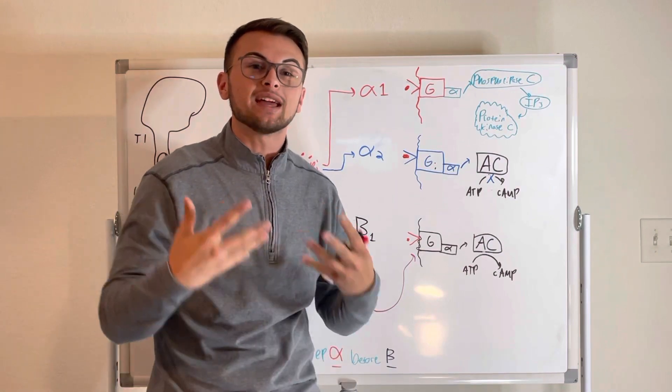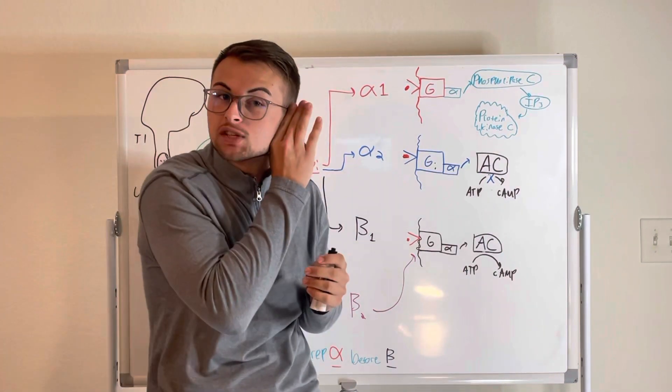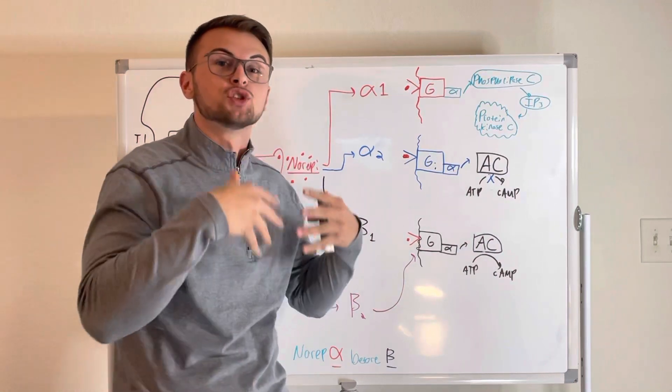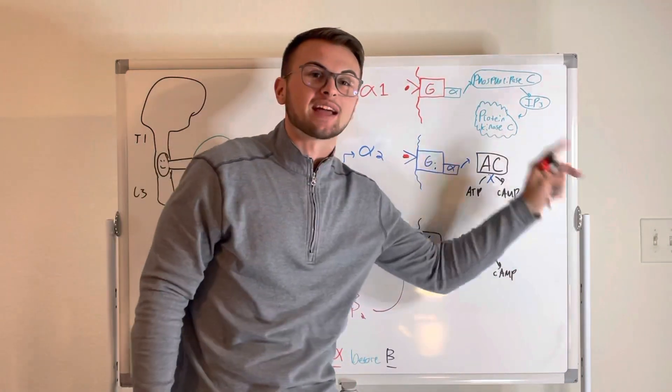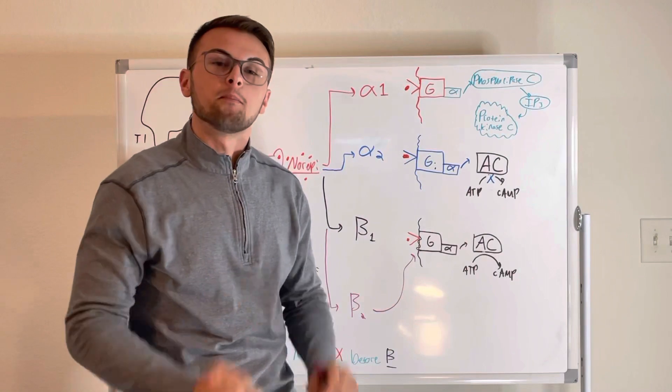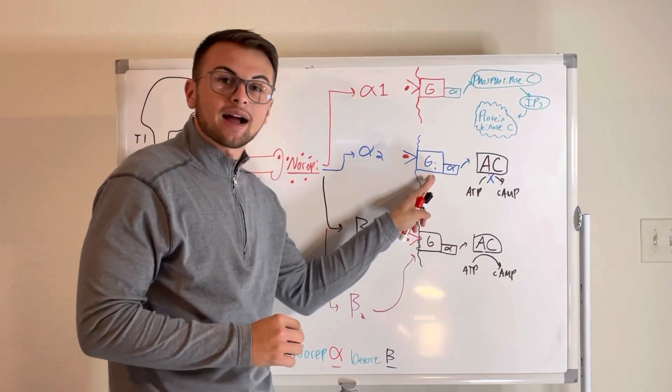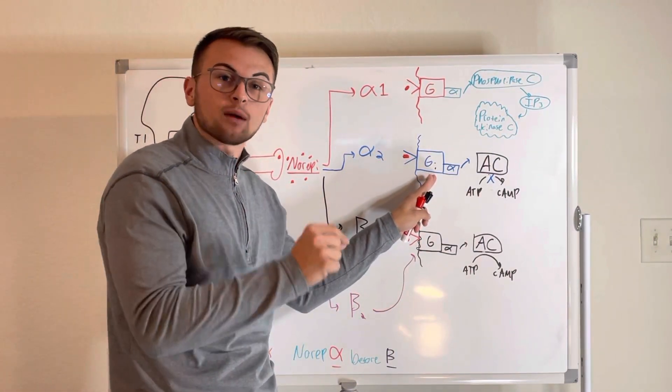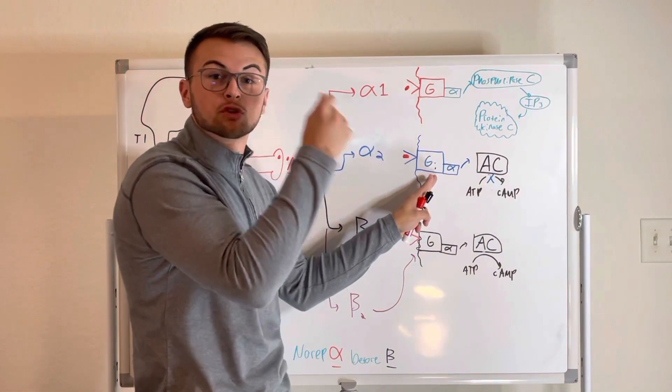So when we increase these second messengers, it's basically like we're taking a whisper and we're shouting so that we can have a sympathetic action in the cell. So basically, once a neurotransmitter binds to our G protein, that receptor will become activated or switched on, and it will send a message to the cell to get to work.